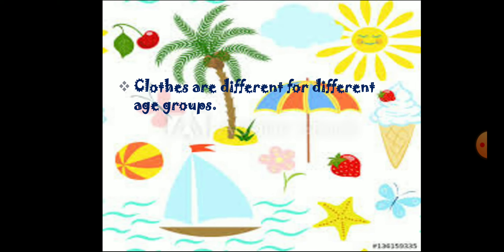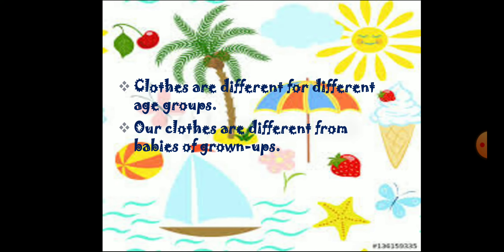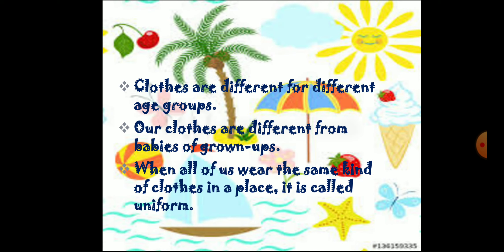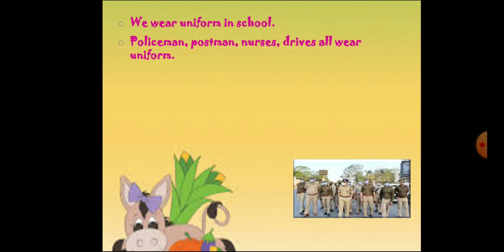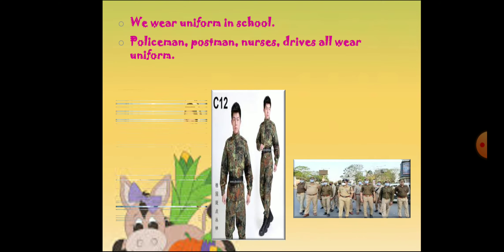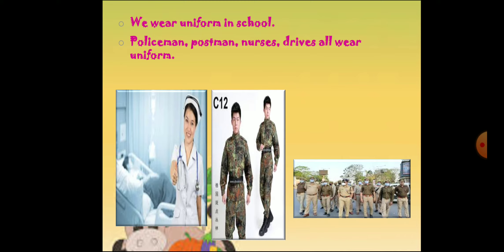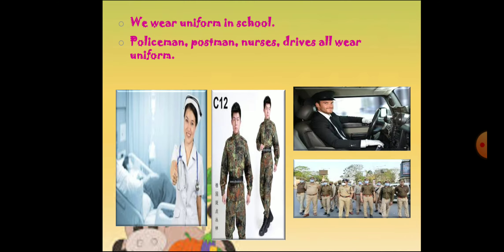Clothes are different for different age groups. Our clothes are different from babies to grown-ups. When all of us wear the same kind of clothes in a place, it is called a uniform. At school time we wear a uniform. Policemen wear their type of dress, postmen wear their type of dress, nurses in the hospital wear their type of dress, and drivers also wear a uniform.